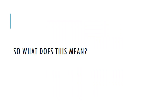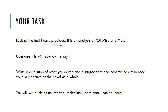Your task is to look at the text I've provided — an analysis of Of Mice and Men that is different to your essay — compare it with your own essay, and write a discussion of what you agree and disagree with and how it has influenced your perspective on the novel. This will be an informal reflection of about 500 words. I care about content here, not formal writing or TEAL structure. I don't mind if you want to record it orally — this is purely a thinking exercise.